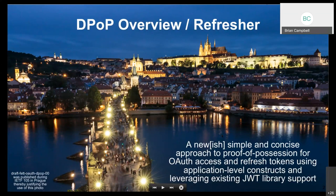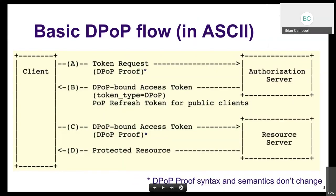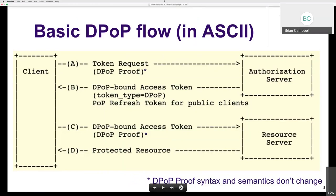The idea is to use existing JWT library support to make it something that people can actually implement and deploy in a relatively simple fashion — not super easy, but something that regular developers can do. The basic DPoP flow involves a token request to the token endpoint to get an access token, then resource access.